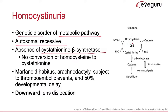Patients with homocystinuria present with a marfanoid body habitus — they can be tall and also have arachnodactyly. Unlike Marfan syndrome, they are also subject to thromboembolic events because homocysteine is thrombogenic, and homocystinuria can also present with developmental delay. Marfan syndrome presents with an upward lens dislocation, while homocystinuria presents with a downward lens dislocation. I remember this because the 'urea' in homocystinuria makes me think of urine, and urine flows downward.